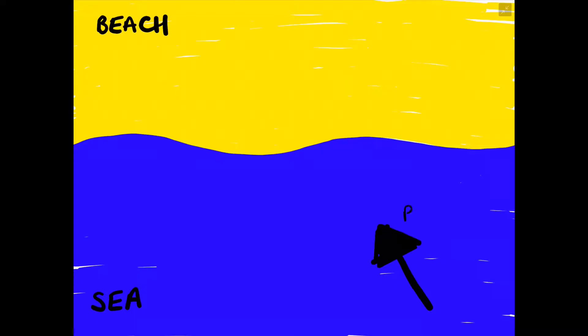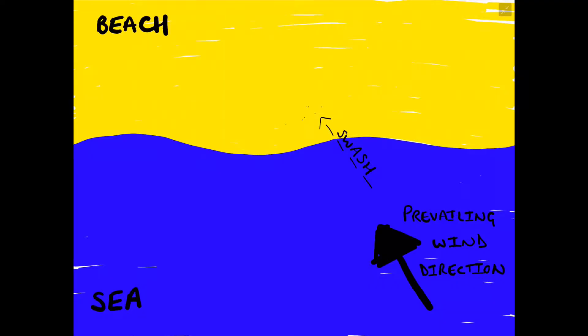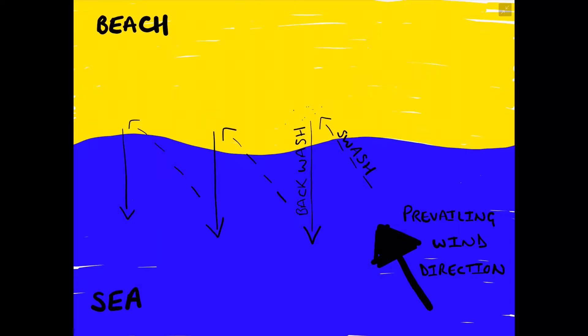Longshore drift is the transportation process of beach material such as sand, shingle and pebbles along the length of the beach. This is determined by the prevailing wind direction, which is the strongest and most dominant wind direction that the coastline is receiving. The prevailing wind direction will force the waves onto the beach through swash at an angle, then pick up sediment off the beach and drag it back into the sea through backwash at a right angle.